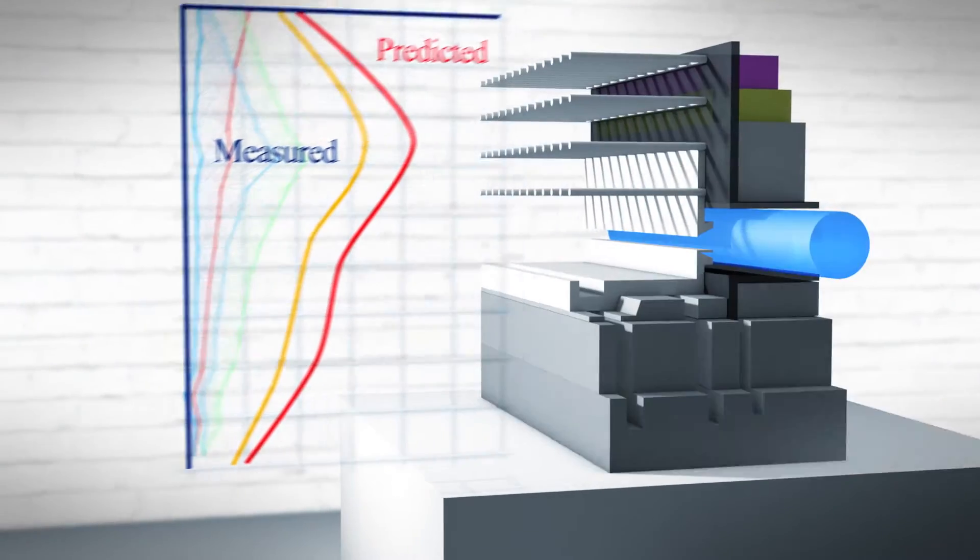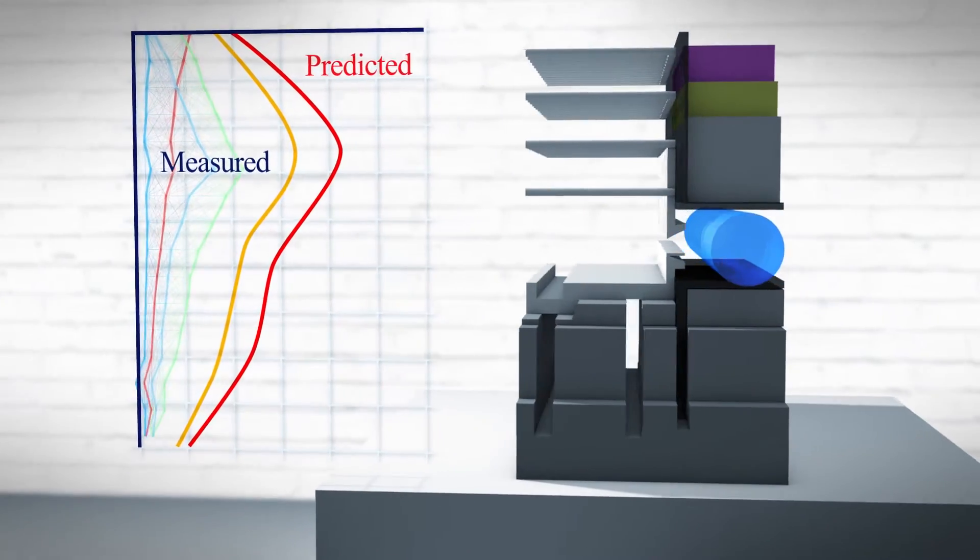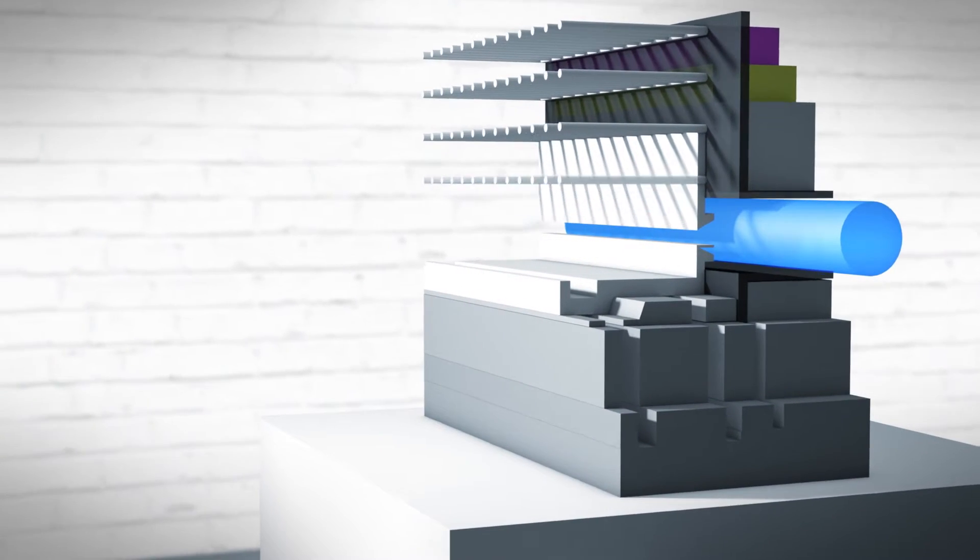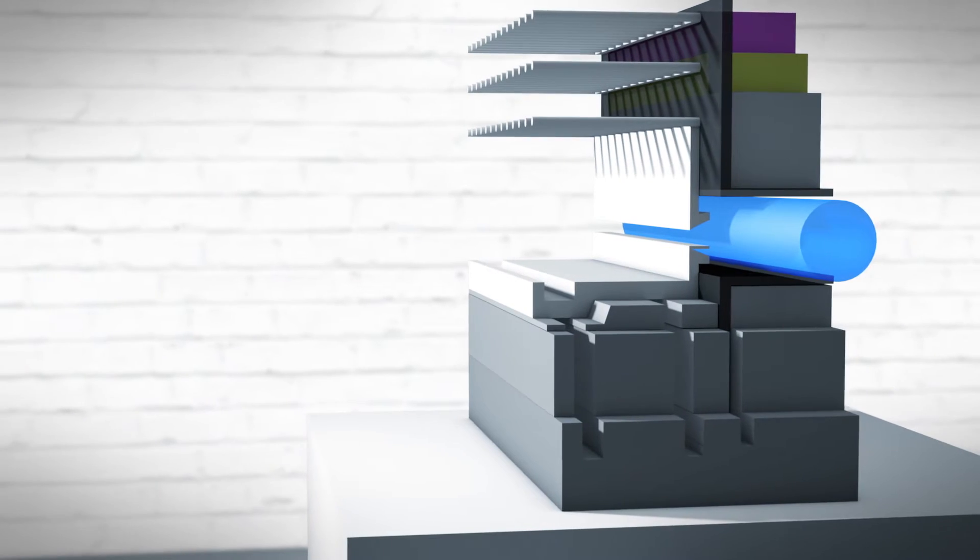The movements were only about half of those that we predicted, and we took the opportunity to back-analyze these movements. If they were smaller, what that meant in terms of stiffer and stronger ground, and to change the construction sequence and omit the final level.